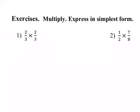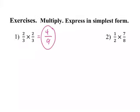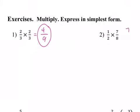Okay, down at the bottom, 2/3 times 2/3. So, numerators multiply these together. 2 times 2? 4. 3 times 3, 9. 4/9. The next one, same thing. 1 times 7 is 7. 2 times 8 is 16. That's as small as we can go.